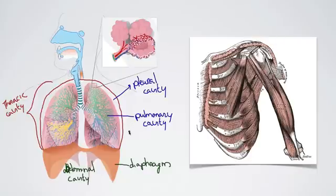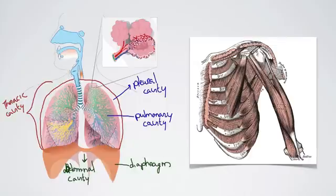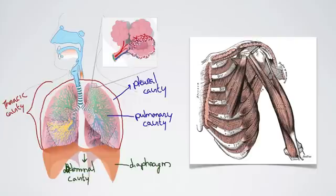When I'm breathing in, there are a number of things happening. First, the diaphragm contracts and moves down. Then we have the external intercostals, and when they contract, that moves the rib cage up. So the diaphragm is contracting, the external intercostals are contracting — this moves down, the rib cage moves up — and the overall effect is that we're increasing the size of the thoracic cavity. When you increase the size, that causes a decrease in pressure in the thoracic cavity.